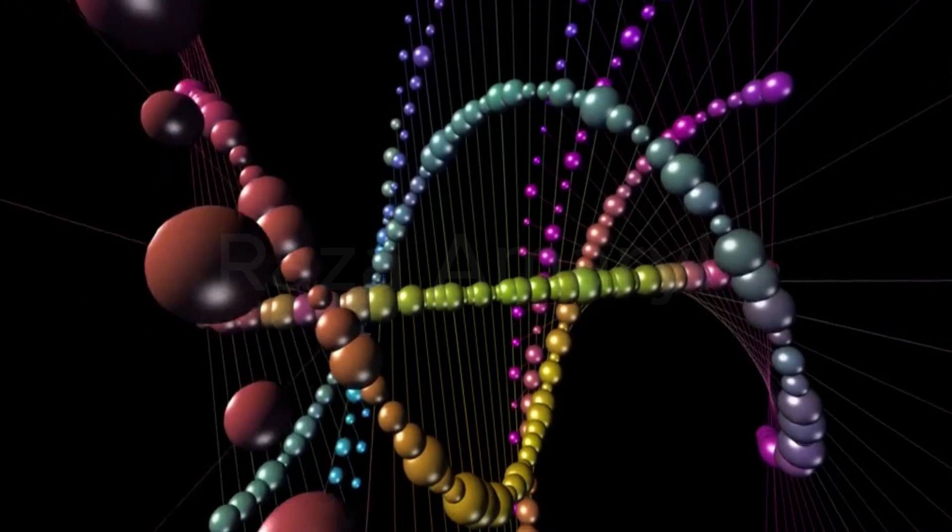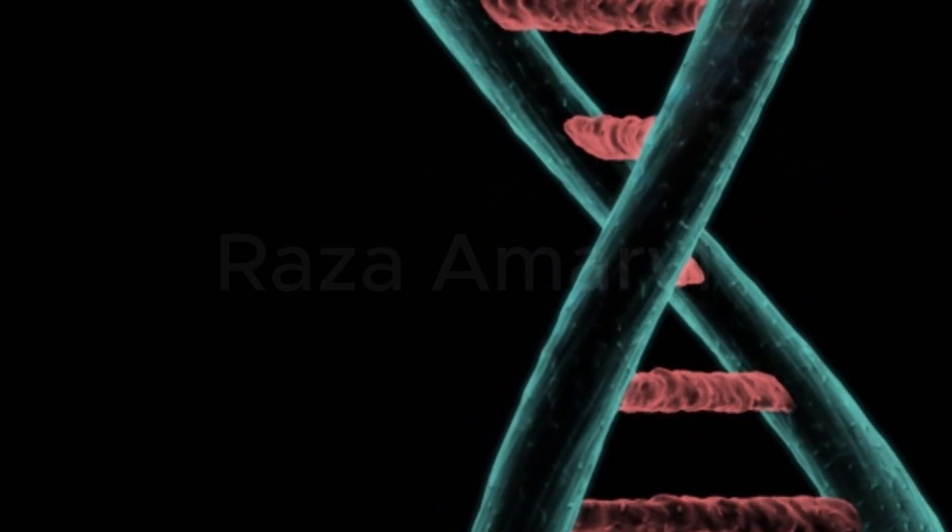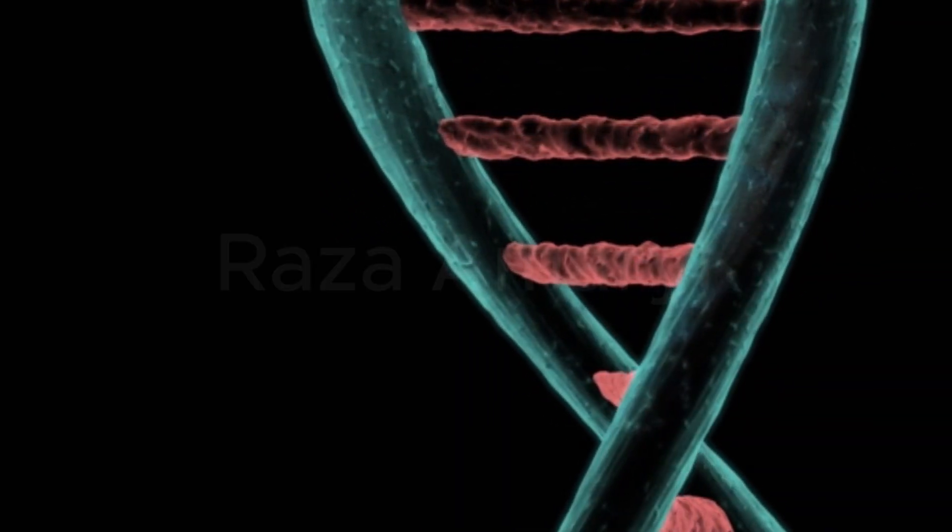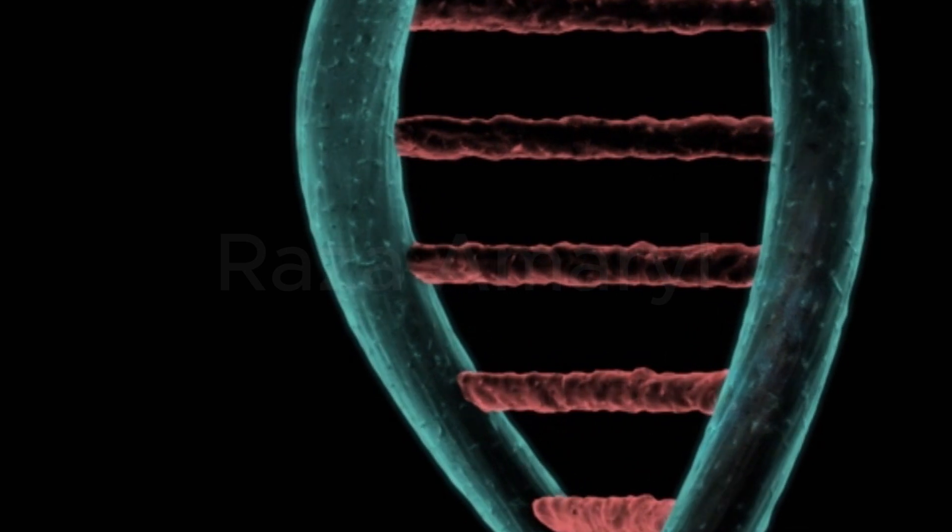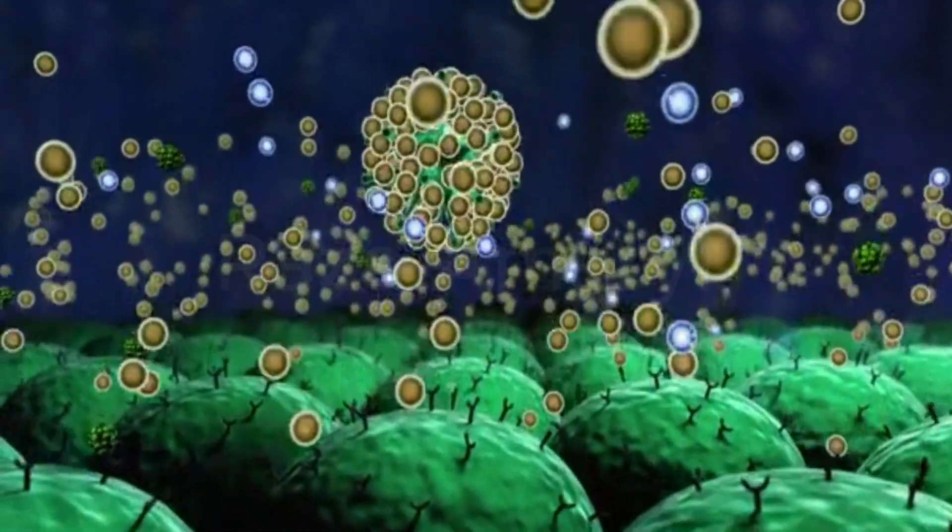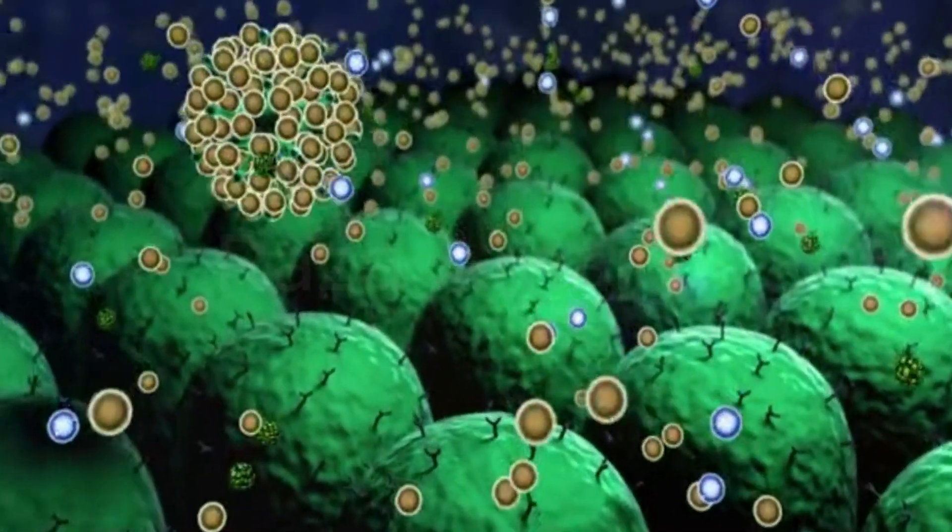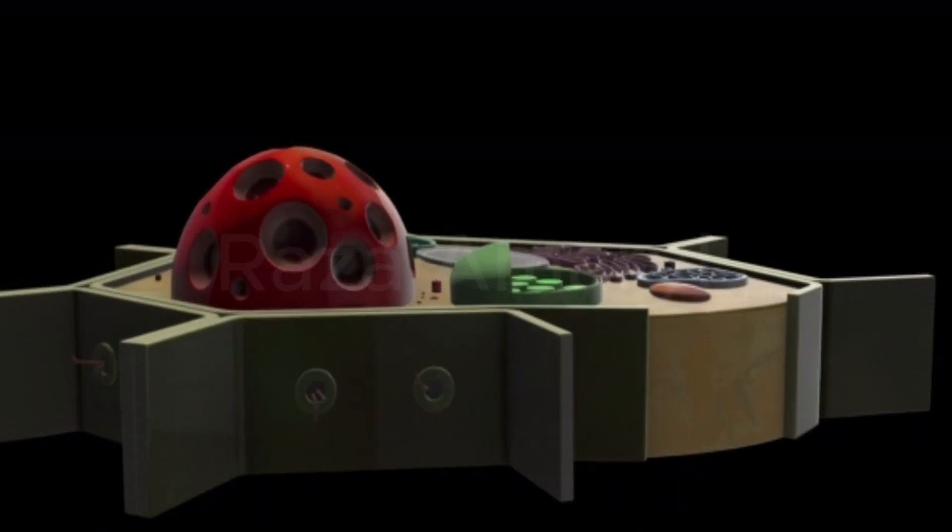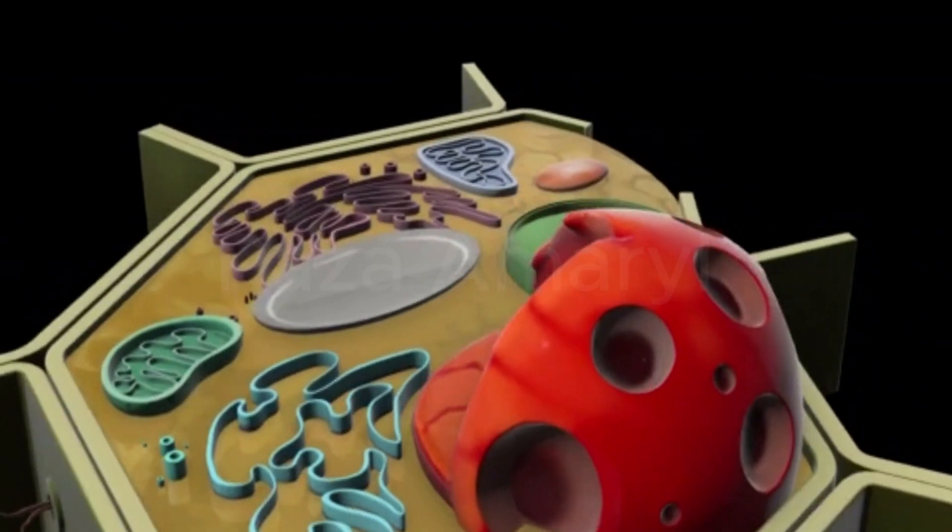Transfer RNA, tRNA, molecules bring specific amino acids to the ribosome based on the codons on the mRNA. Each tRNA molecule carries an anticodon that is complementary to the mRNA codon, ensuring that the correct amino acid is added to the growing polypeptide chain.